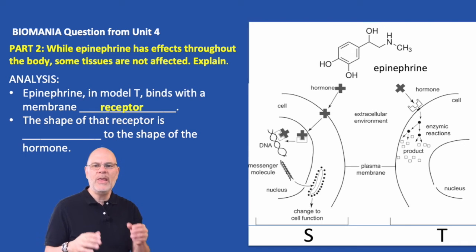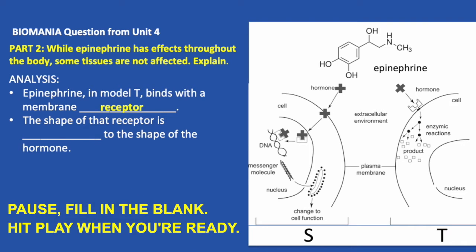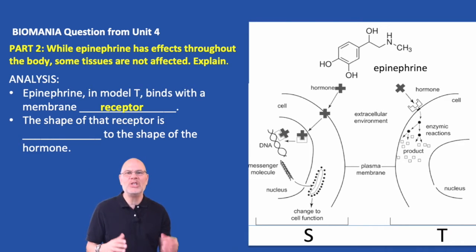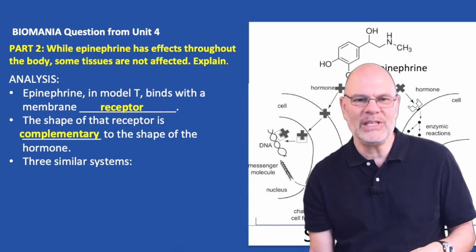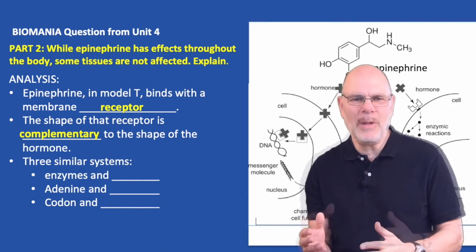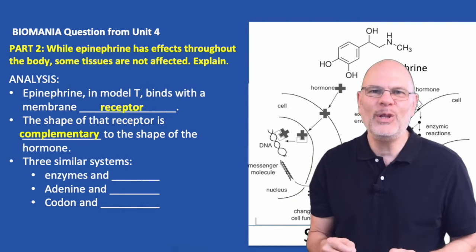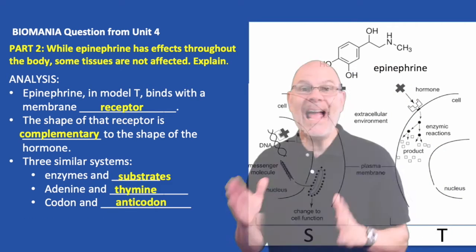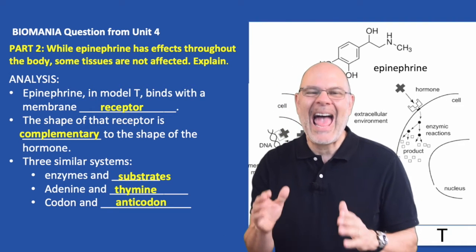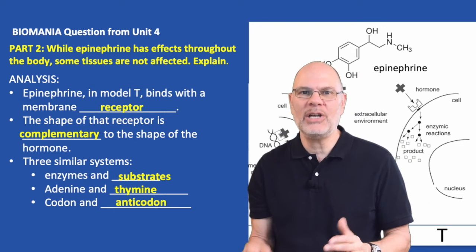The shape of that receptor is complementary to the shape of the hormone. Complementary means things that fit together. Let's think about three similar systems: enzymes are complementary to what? Adenine is complementary to what? Codon is complementary to what? Enzymes are complementary to substrates. Adenine is complementary to thymine. Codons are complementary to anticodons.